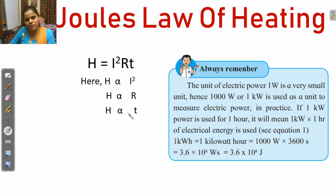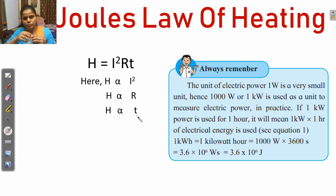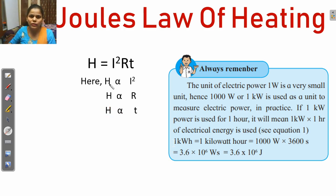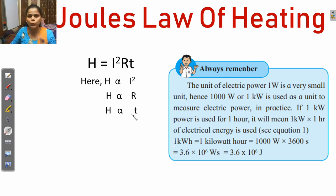Next, H is directly proportional to T. That means if we increase the time of the current flow, then the heat produced also increases. So, H is directly proportional to I squared, H is directly proportional to R, and H is directly proportional to T.